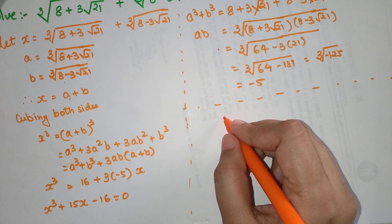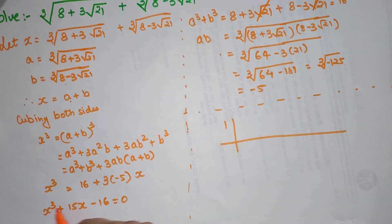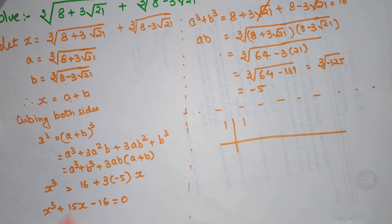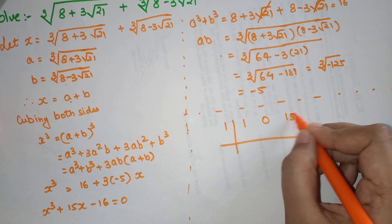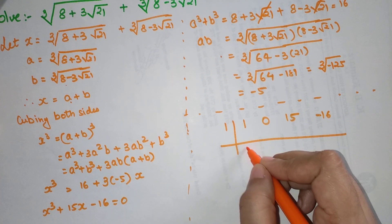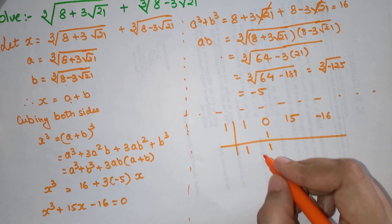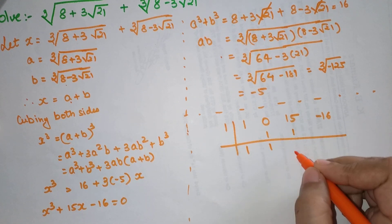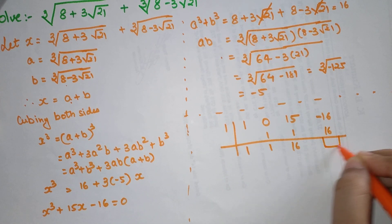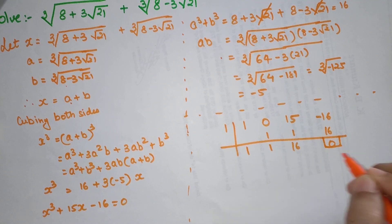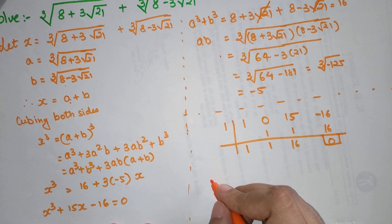Here I'll write the coefficients. The first coefficient is 1, then there is no x squared term, so that is very important, you need to take that as 0. The next coefficient is 15, the last coefficient is minus 16. First is 1, then 1 times 1 is 1, so I get 0 plus 1, that is 1. 1 times 1 is 1. 15 plus 1 is 16. 1 times 16 is 16, and then minus 16 plus 16 is 0. When you get this last term as 0 over here, only then you can assume that your entire synthetic division equation was correct.